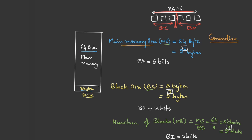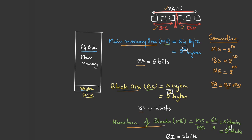If we generalize: memory size can be expressed as 2^(physical address bits); block size gives us block offset, so block size = 2^(block offset bits); the number of blocks gives the block index, so number of blocks = 2^(block index bits). The physical address is a combination of block index and block offset bits, so PA = BI + BO, where PA, BI, and BO are the number of bits. In our example: 6 = 3 + 3.